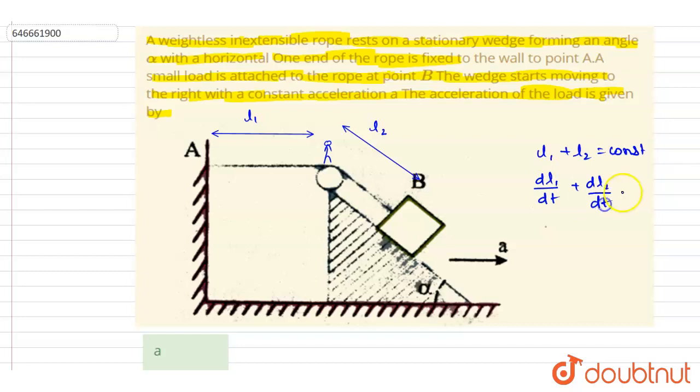And double differential will also be zero. From here you will get the rate at which l1 is increasing is also the rate at which l2 is decreasing.